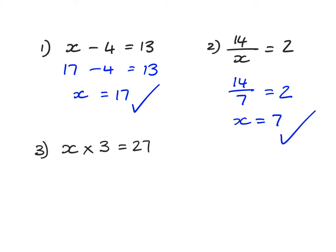The last one: x multiplied by three equals twenty-seven. I know my times tables — nine multiplied by three equals twenty-seven, therefore x must equal nine.